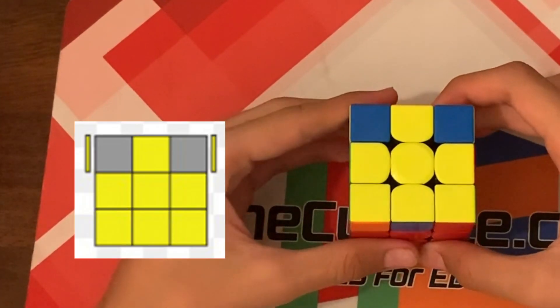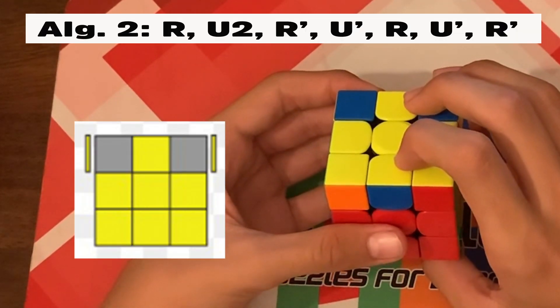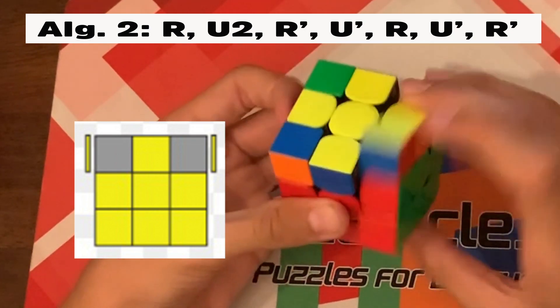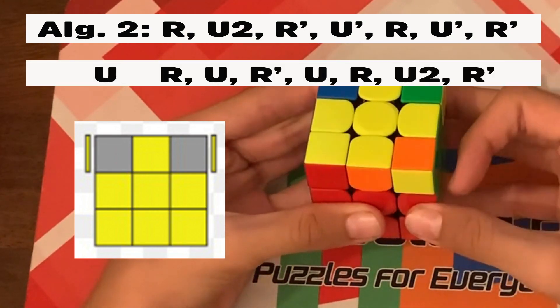And lastly, if your cube looks like this, do algorithm two U, algorithm one.